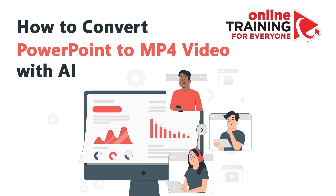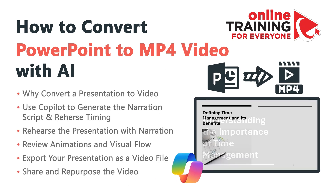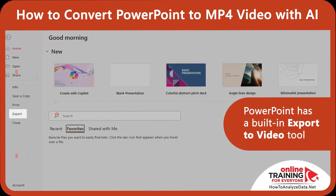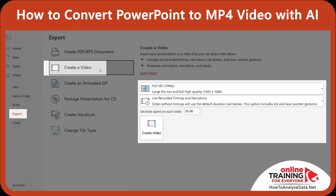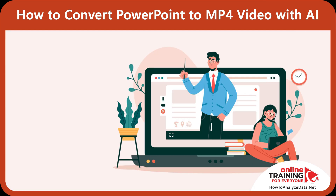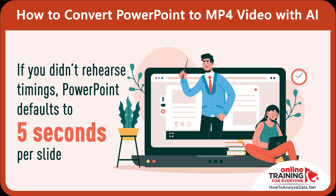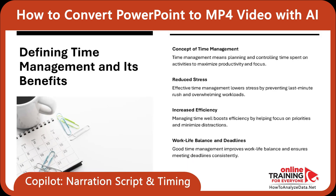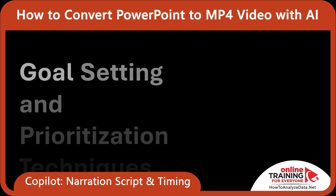Very often you may need to share a presentation with people who won't be there live. I needed to turn my Time Management Strategies that work PowerPoint into a video — something I could share with clients or drop into a training portal. PowerPoint has a built-in export to video tool, and with a little help from Copilot, the process was fast and polished. I used Microsoft Copilot to generate the narration script and rehearse timings. If you don't rehearse timings, PowerPoint defaults to 5 seconds per slide — that's fine for static slides, but bad for animated ones. Because my PowerPoint deck had animations, I felt I needed to do pacing first before exporting the video.